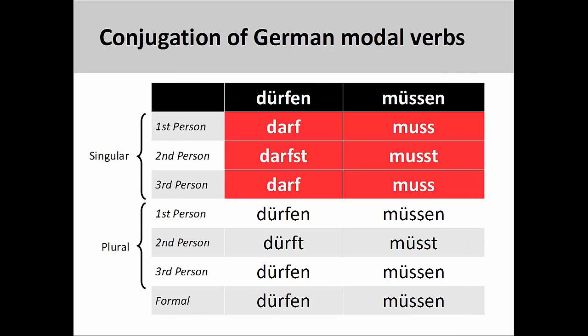Most singular forms of the modal verbs have a shift in the stem vowel. For example, as you see on the screen, the stem vowel in the modal verb dürfen changes from ü to a in the singular, but goes back to ü in the plural.